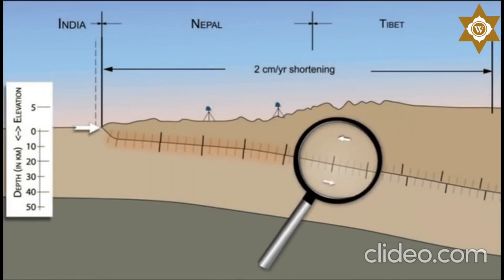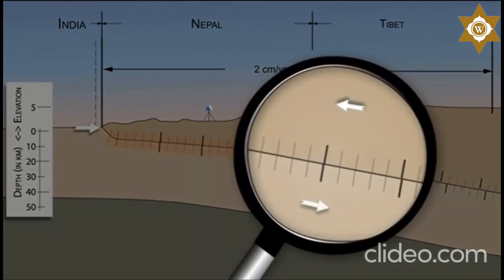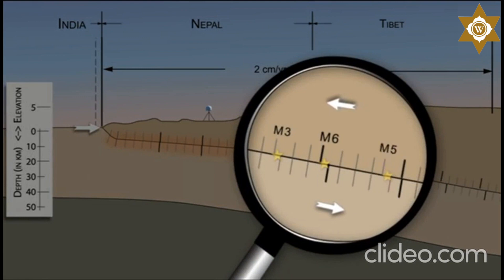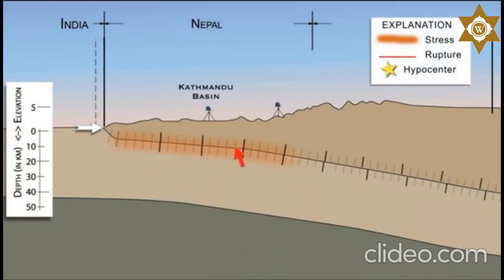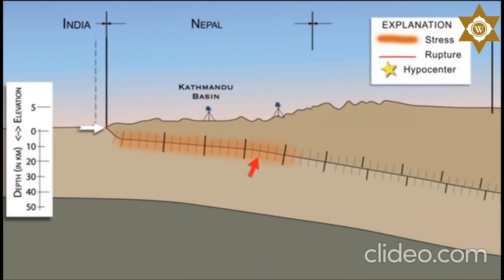In the 15 to 20 kilometer depth range, frequent magnitude 3 to 6 earthquakes occur on the megathrust plate boundary. The shallow part of the fault is locked by high friction, and stress increases during motion on the fault at deeper levels.